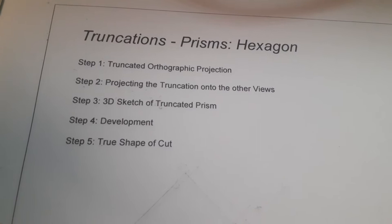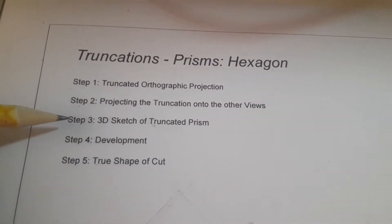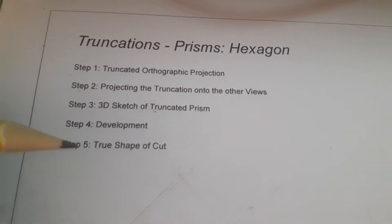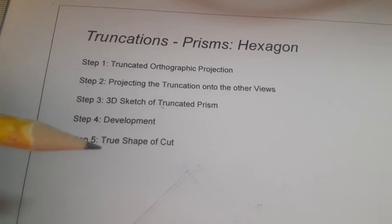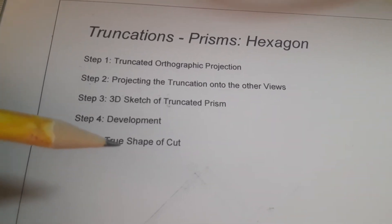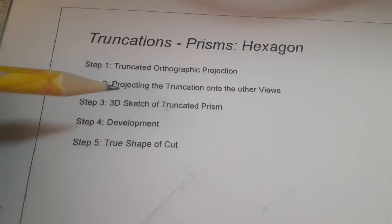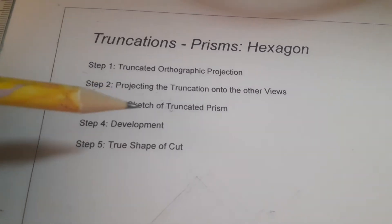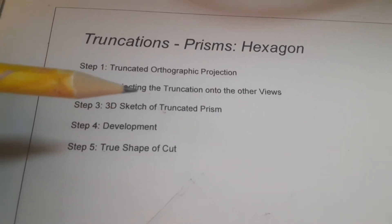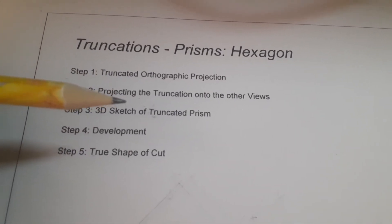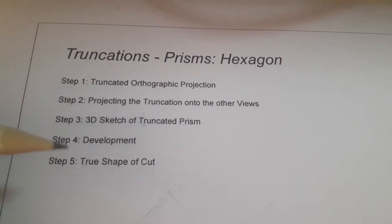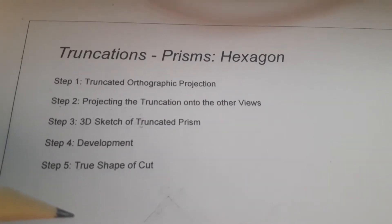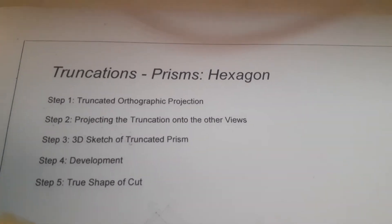Step 3: 3D sketch of the truncated prism. This one technically does not have any marks dedicated to it, and I'm not going to do it because this video is already going to be quite long. But the 3D sketch of the truncated prism — if you're a beginner, it will help you because it will allow you to see the cut view. Step 4: development. Step 5: true shape of cuts — the true shape of cuts will allow us to see the cuts, the full complete cuts in its true form with the proper dimensions.